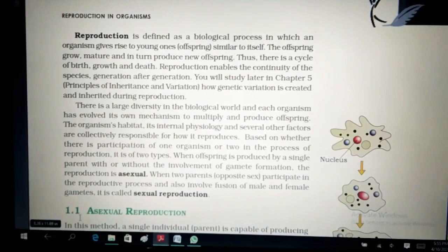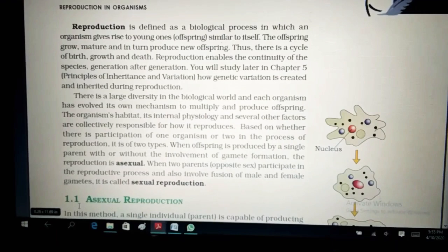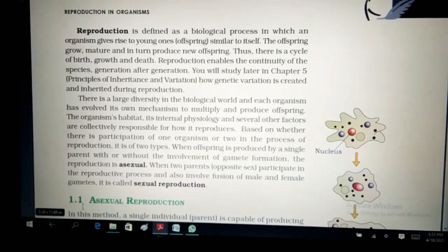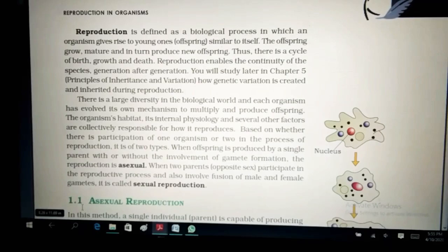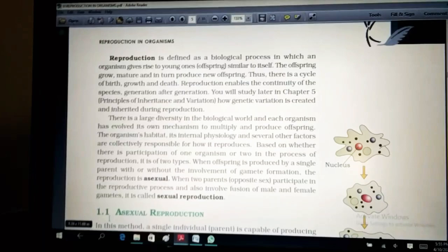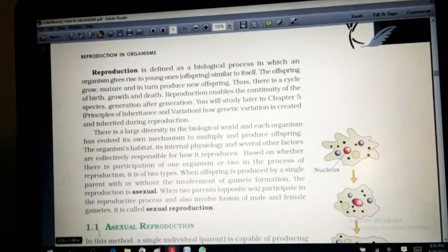Now the theory. Reproduction is defined as a biological process in which an organism gives rise to young ones, offsprings similar to itself. The offsprings grow, mature and in turn reproduce new offsprings. Thus, there is a cycle of birth, growth and death. Reproduction enables the continuity of the species generation after generation. Here, what is reproduction now? Reproduction is the biological process. Biological process means something that is related to bio. Bio means life and logical means something that has been derived from the living things.